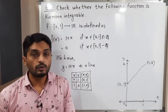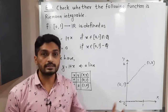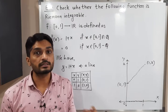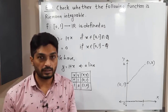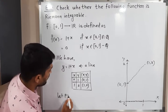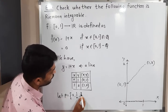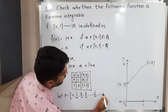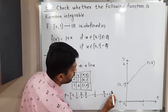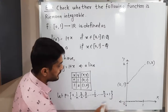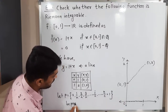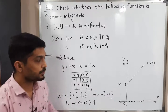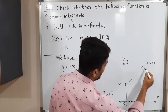Now consider any partition. We divide the interval [0,1] into n equal parts. The partition is P = {0, 1/n, 2/n, 3/n, ..., i/n, ..., n/n = 1}, which is a partition of the closed interval [0,1]. The length of each sub-interval is Δx_n = 1/n.